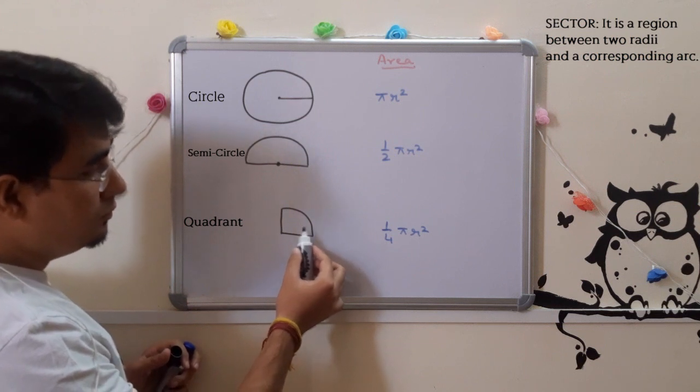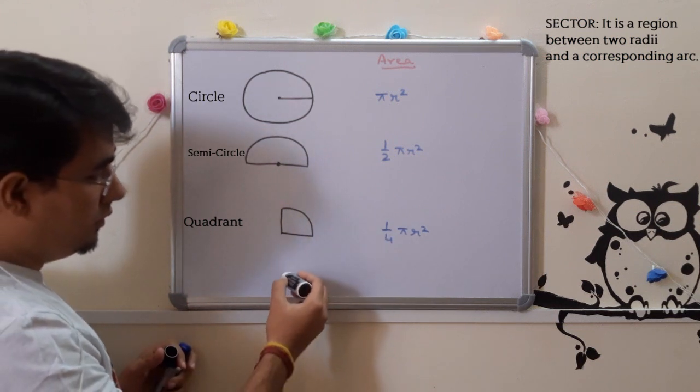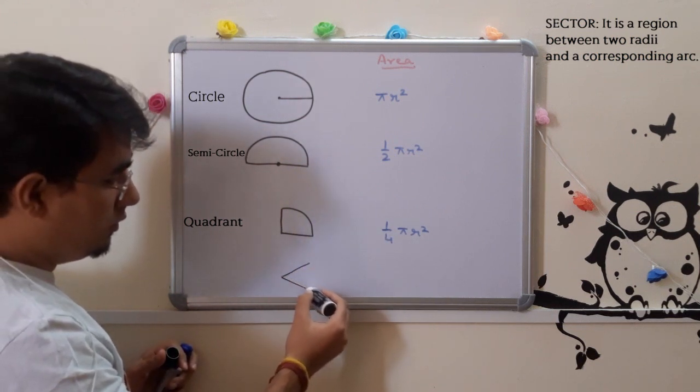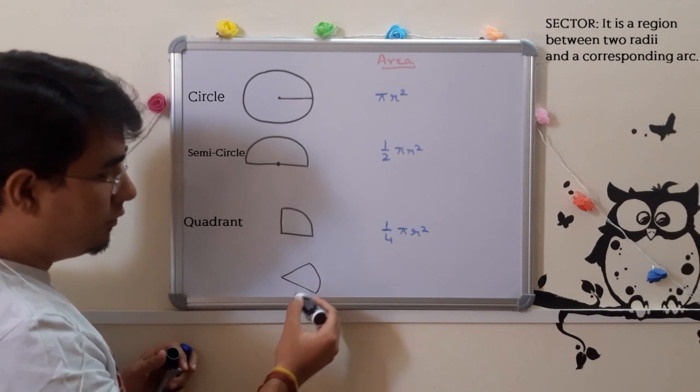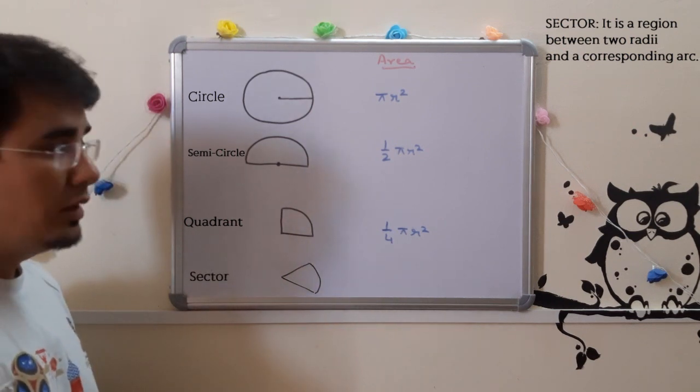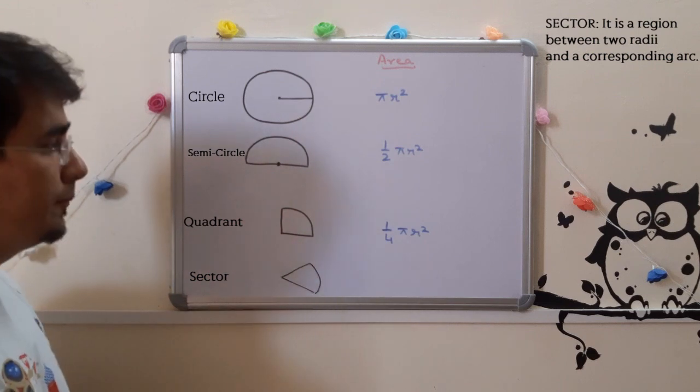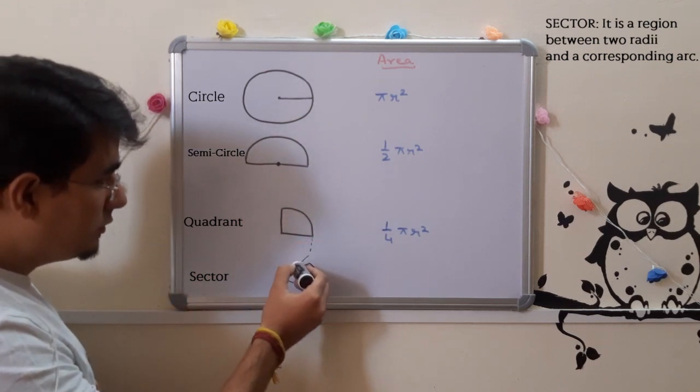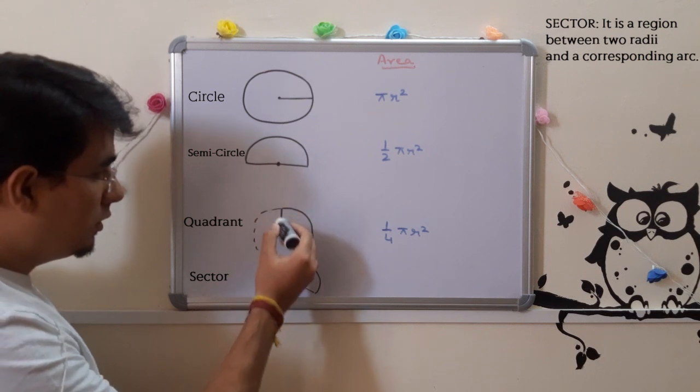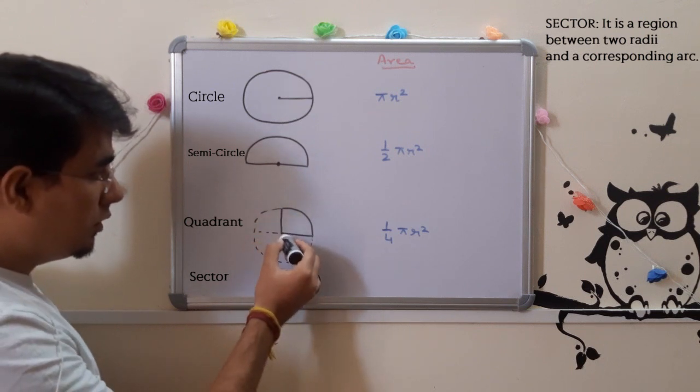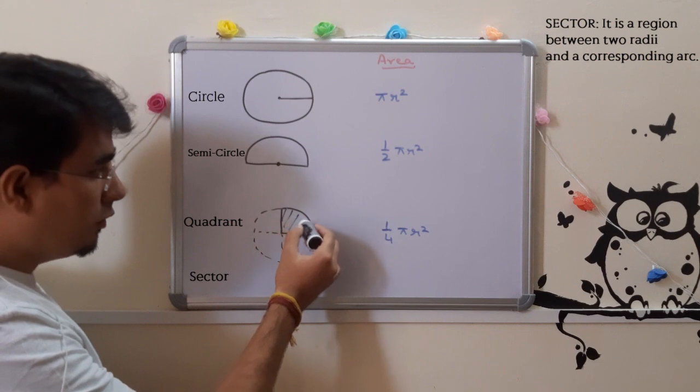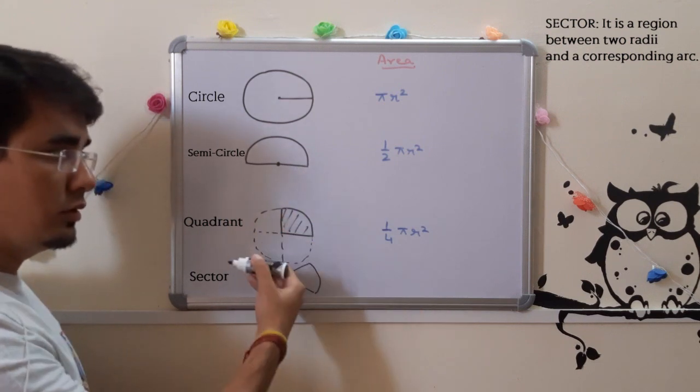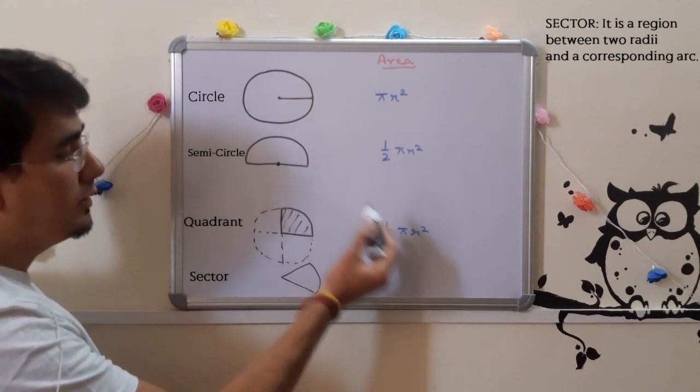So how can you find the area of any given sector? Let us try to derive the formula from here. As you can see, if I just complete this circle, this is what? One-fourth of a circle. That's why it is 1/4.